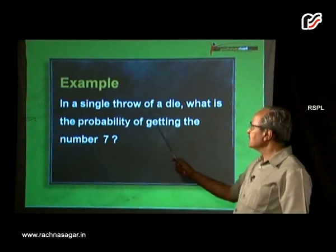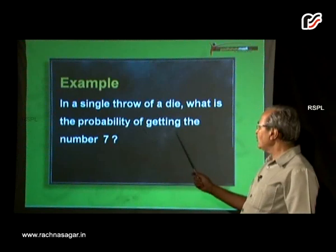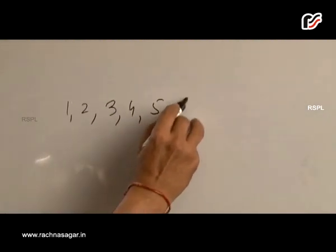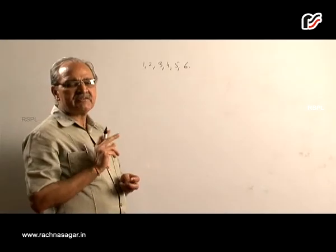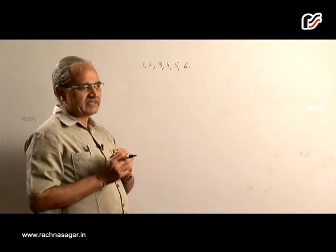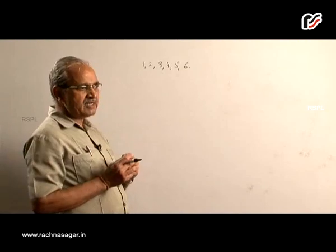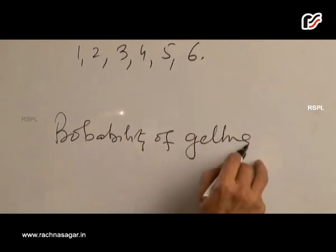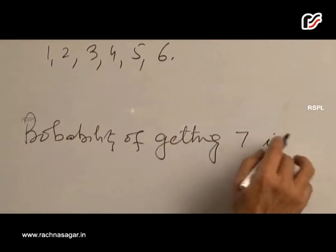An example is: in a single throw of a die, what is the probability of getting the number 7? In this question, we notice that a die is thrown and we want to find out probability of getting a number 7. As you know, in a die we only have numbers 1, 2, 3, 4, 5, 6. Can we get number 7 in a die? We can't get it, because the maximum number is 6. That means this is an impossible event, and probability of getting 7 is 0.